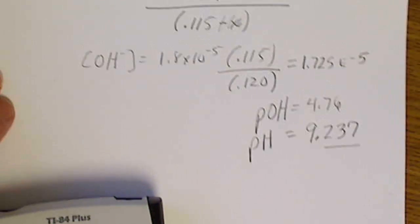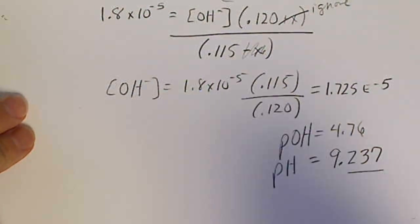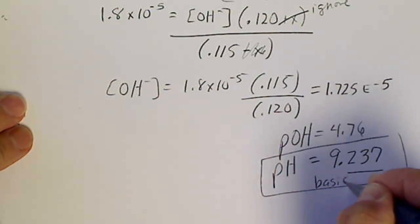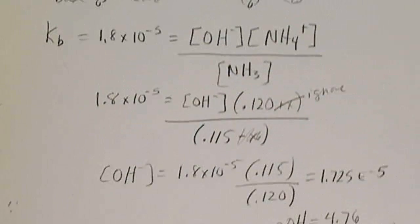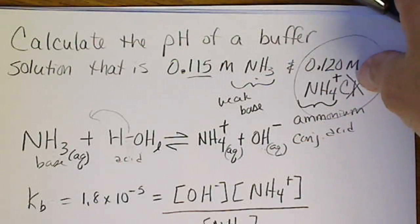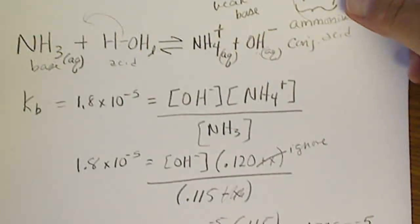And so the pH of our buffer solution, this would be basic. And that should make sense because our buffer solution was made from a base, a weak base ammonia, and its conjugate acid ammonium salt.